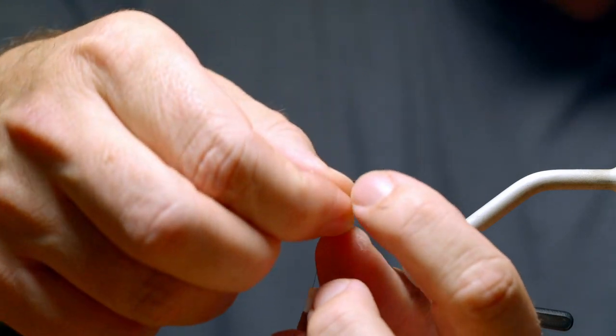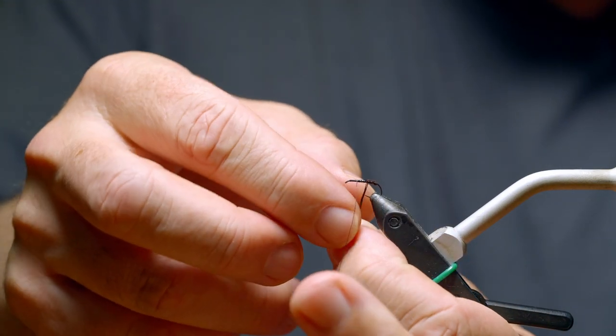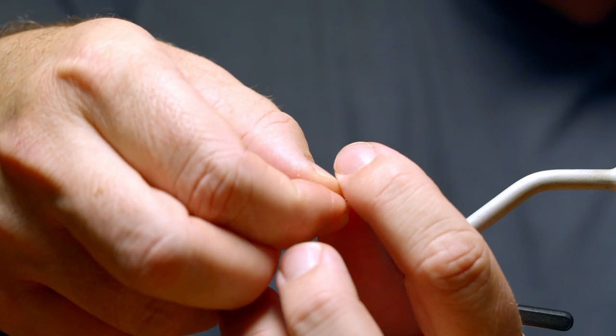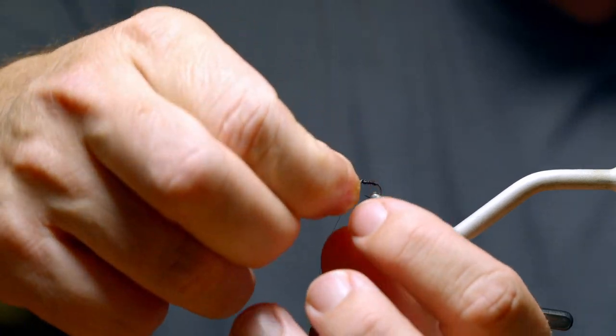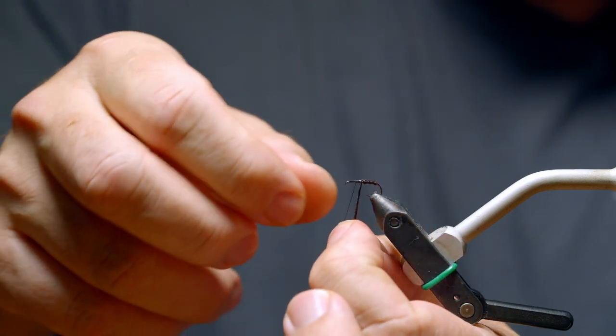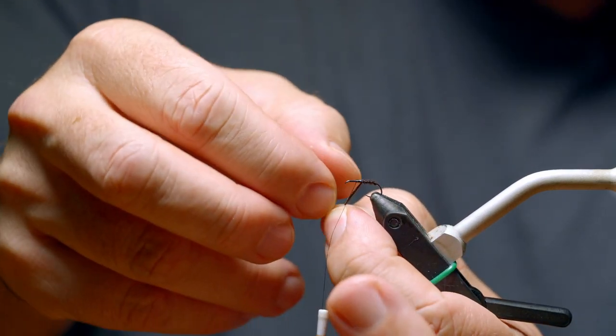I put the glue base, which works really well. Another version, spin it onto the thread. I suggest you'll see another video where I do a pheasant tail nymph. You could do that version as well for more durability. Your choice.